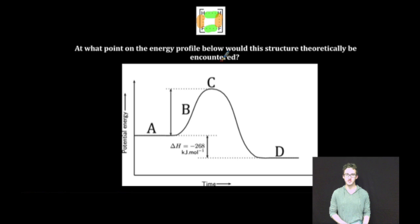Our activated complex is most likely going to be found at the peak of our energy profile in location C. It's at that point that our reactant molecules have enough energy to begin to break reactant bonds and form product bonds. And we are done!